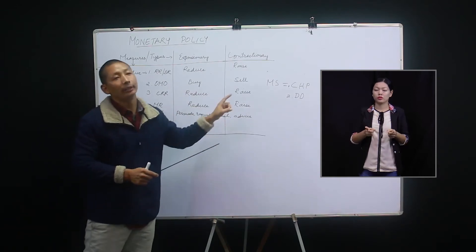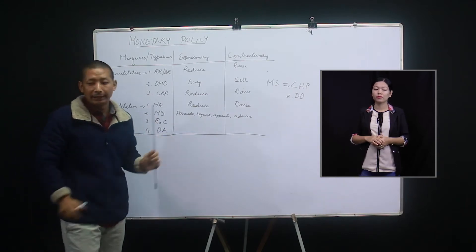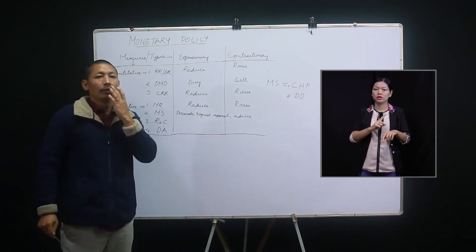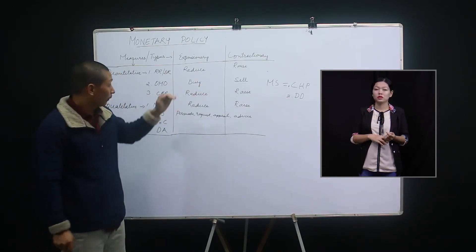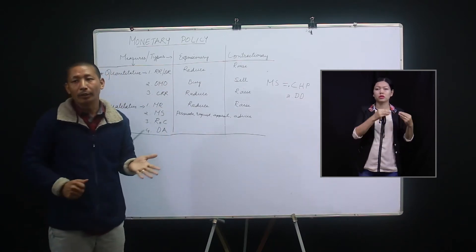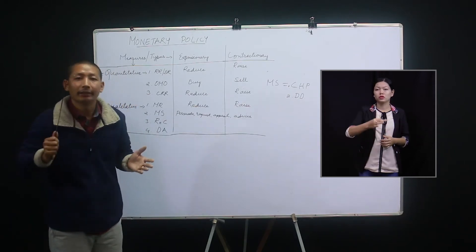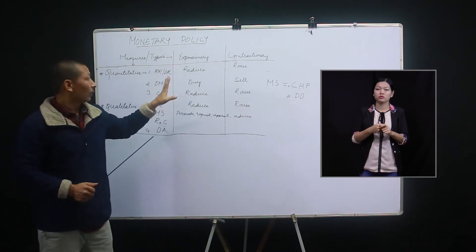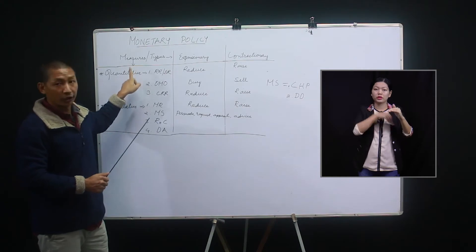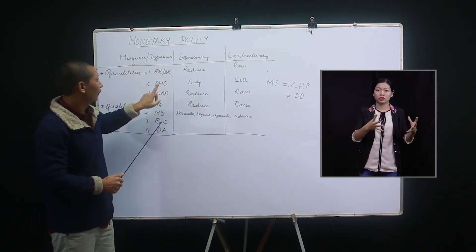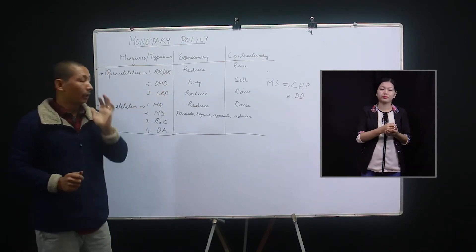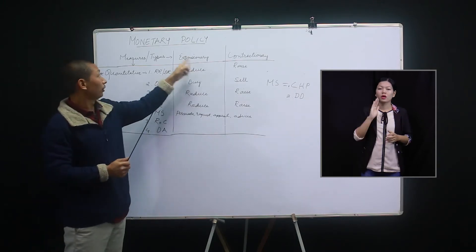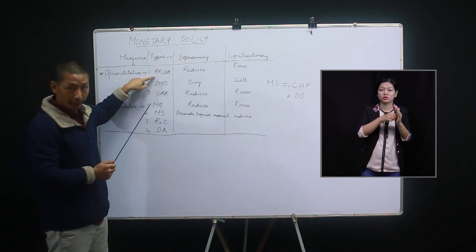The government adopts both quantitative and qualitative measures at a time in order to control excess demand or deficient demand in the economy. Under expansionary monetary policy, the first quantitative measure is repo rate or bank rate. The second is open market operations, and the third is cash reserve ratio. When the government follows expansionary monetary policy, the first step under quantitative will be repo rate or bank rate.